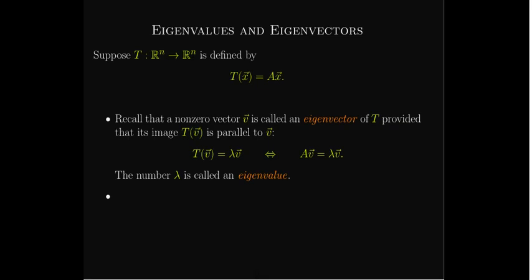Quick review. If we have a linear transformation with its standard matrix A, and a non-zero vector — all eigenvectors have to be non-zero vectors — if we have a non-zero vector V, and its image is parallel to V under T, so T of V equals lambda V, or AV equals lambda times V, then V is an eigenvector, and lambda is the scale factor, the eigenvalue.